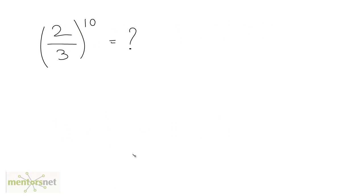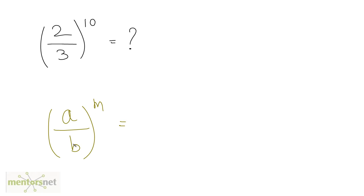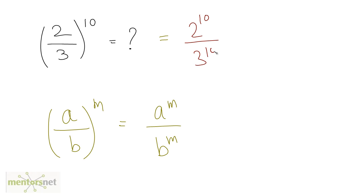If you have a divided by b, the whole raised to m, then you can split this power to both the numerator and denominator. So you can write a raised to m upon b raised to m. For example, this equals 2 raised to 10 upon 3 raised to 10.